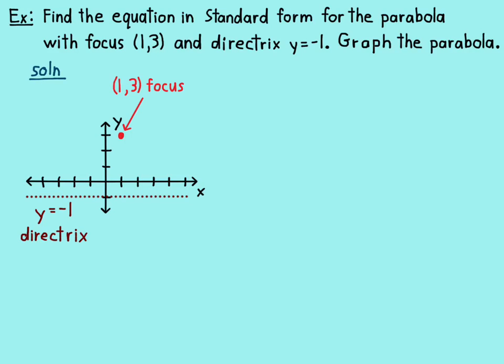So that's the directrix. Now, the vertex will be halfway between the two. So I can look at it and I can see that the vertex should be right here. 2 down from there and 2 up from there. So p is 2 here.